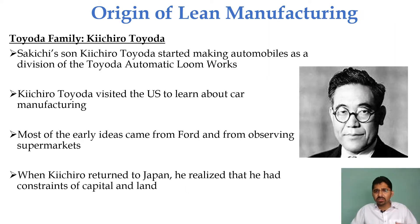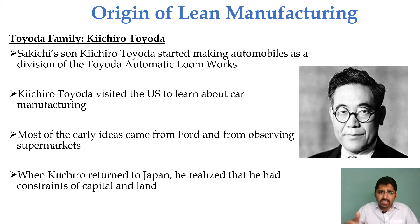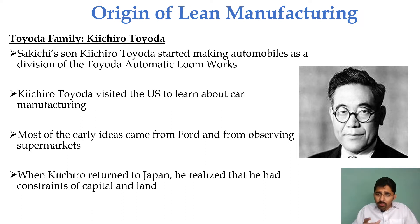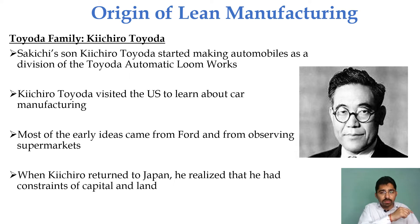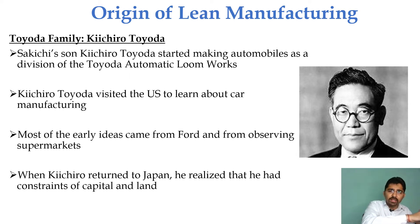The message of transforming from manual to automation was carried to the next generation. Kichiro Toyoda started to make automobiles as one of the divisions of the Toyota Automatic Loom Works. He was the one who brought the concept of working on automobile parts. Using the same principles from the loom work, he wanted to apply them to the automobile industry.